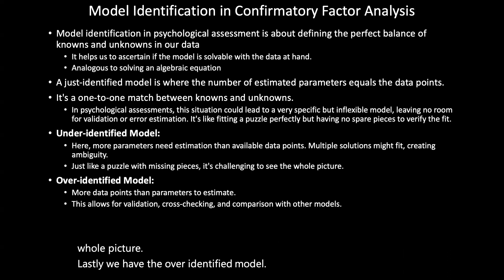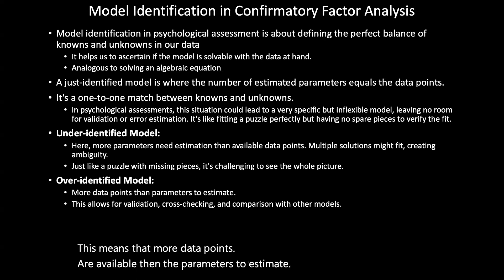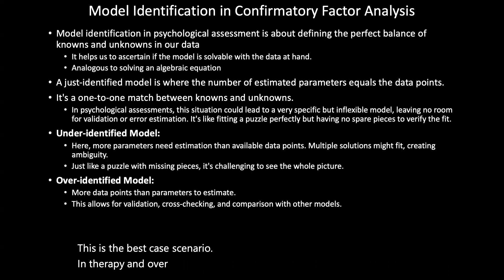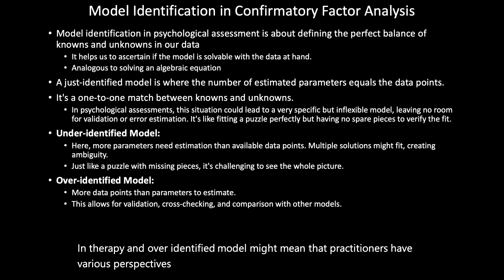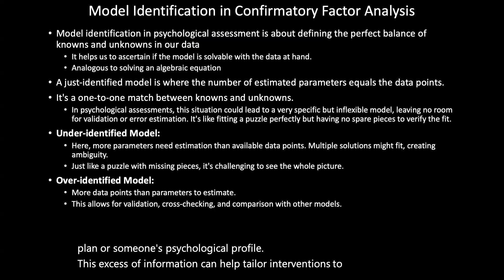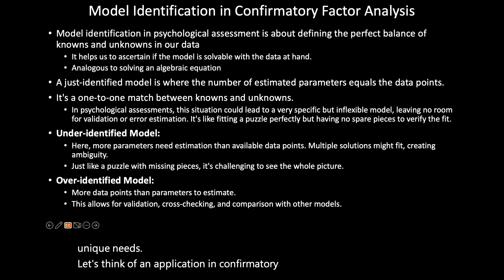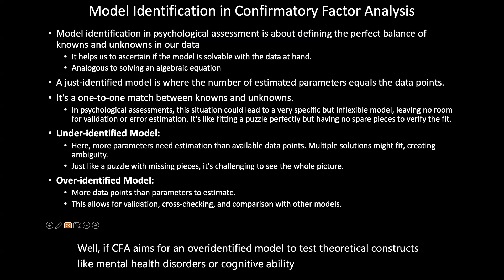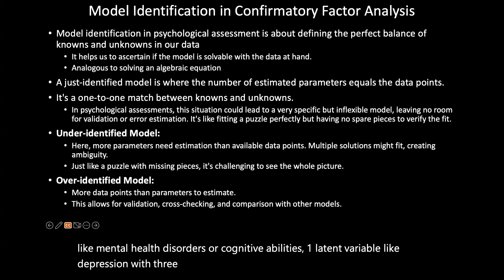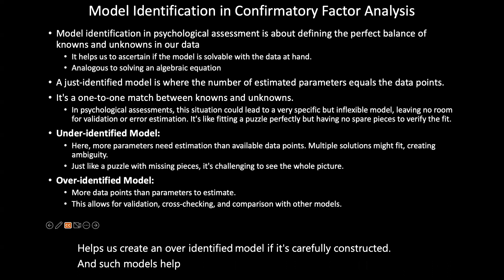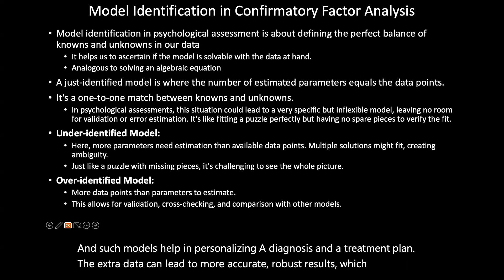Lastly, we have the over-identified model, where more data points are available than parameters to estimate. This allows for validation, cross-checking, and comparison with other models — this is the best-case scenario. In therapy, an over-identified model might mean practitioners have various perspectives and additional information to validate a treatment plan. In CFA, if one latent variable like depression has three indicators like sadness, fatigue, and loss of interest and is carefully constructed, we can create an over-identified model that helps in personalizing diagnoses and treatment plans, leading to more accurate and robust results.